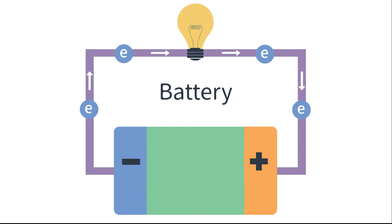Now let's say I want to represent this circuit with a circuit diagram. You might ask yourself, why do I really care about a circuit diagram? But remember, this is a very simple circuit, and some circuits get quite complicated, and we need to clearly communicate what's going on in them. So we'll start simple, and we can build to a more complicated circuit diagram.